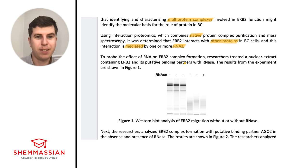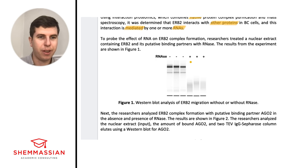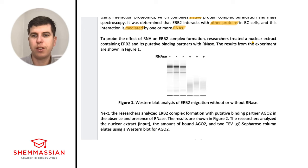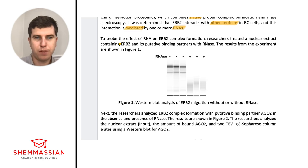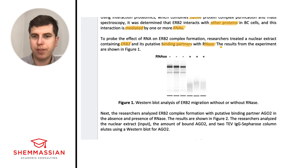To probe the effect of RNA on ERB2 complex formation, researchers treated a nuclear extract containing ERB2 and its putative binding partners with RNAase — the enzyme that degrades RNA. The results from that experiment are shown in figure one.